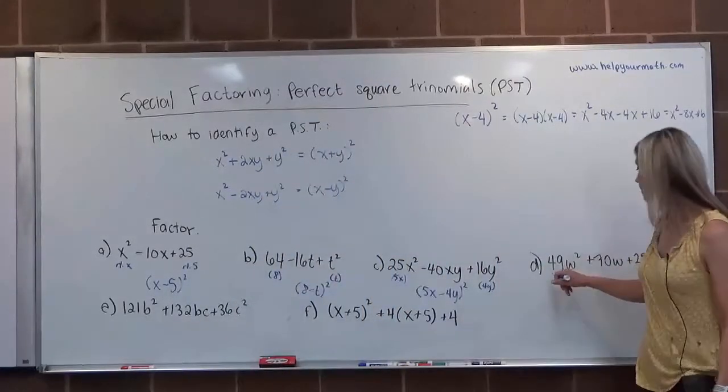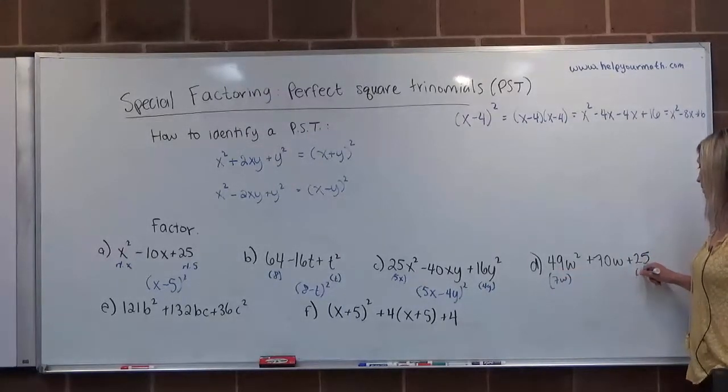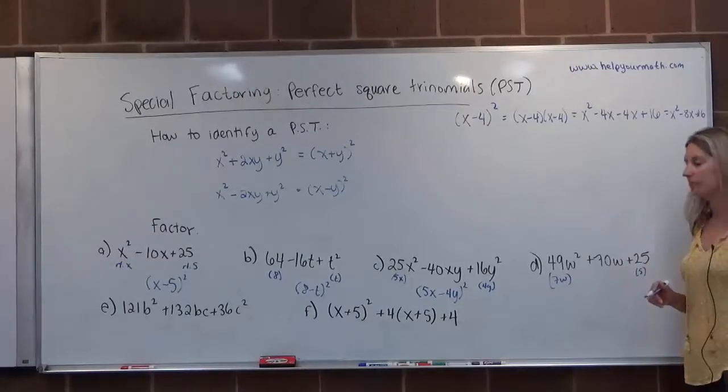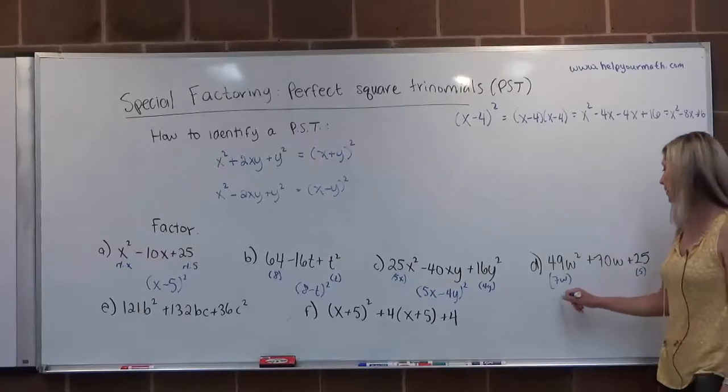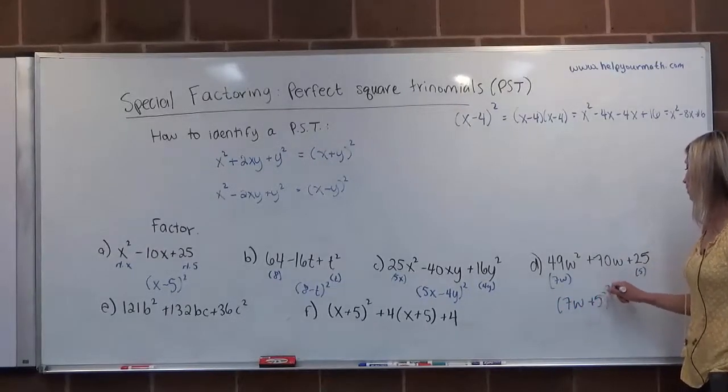49W squared, that's a perfect square, and its root is 7W. 25, we've already talked about being a perfect square of 5. If we multiply 7W and 5, we get 35W. Doubled would give us 70W. So it is a perfect square, and it would be 7W plus 5 quantity squared.